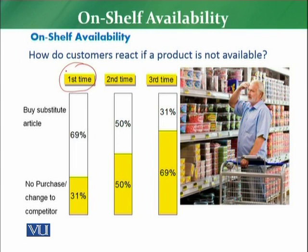Maybe the customer will buy that particular product from some other competitor. Now, the second time — if a customer has visited the store and still the product which he planned is not available — 50% of cases the customer will buy a substitute product, and the remaining 50% is the probability that the customer will not purchase from that retail store or will buy from a competitor.